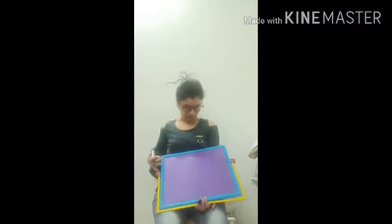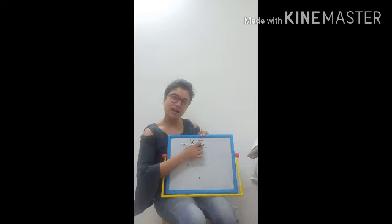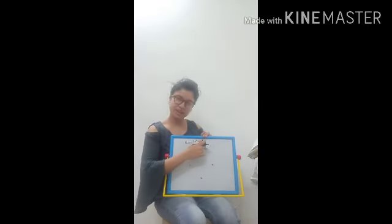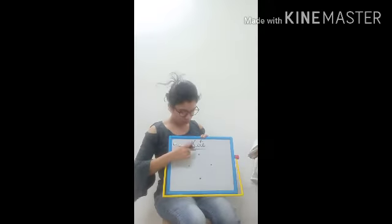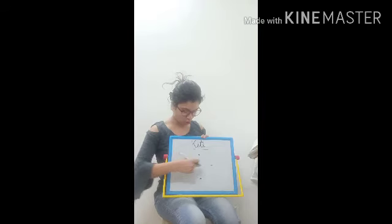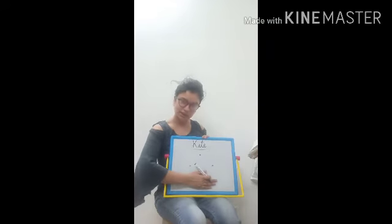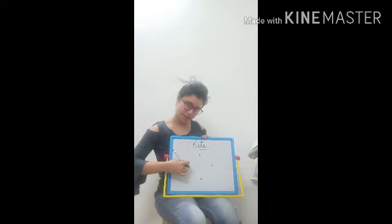So, shall we start it? Okay. What is the spelling of kite? K-I-T-E, kite. First of all, for making a kite, you should make three dots. How many dots? Three dots for making a triangle. Forget this one. Okay? Three dots for making a triangle.